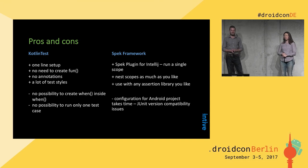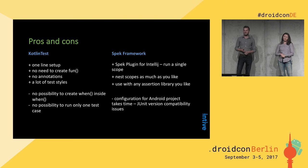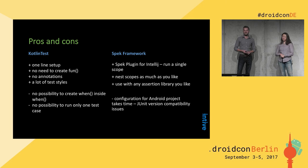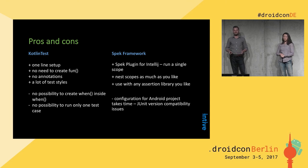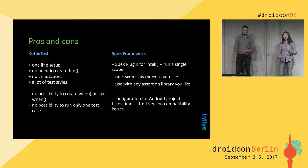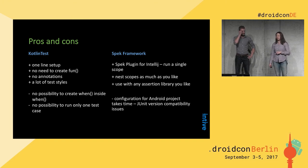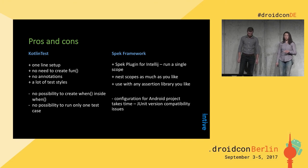Let's go to quick pros and cons about these two libraries. In Kotlin test, I really like the one-line setup compared to the Spek framework. No need to create functions, no annotations, and Kotlin test provides a lot of test styles. From the negatives: there is no possibility to put when inside when — there's a limit — and no possibility to run only one test case; we have to run the whole class at once. From Spek framework, I really like that we can nest scopes and use any assertion library we want — it could be Hamcrest, Kotlin test, or Expekt. With the plugin, we can run a single scope. And yes, as I mentioned, configuration was a nightmare, but you don't have to do it as I've already done it and it's available in our repository.